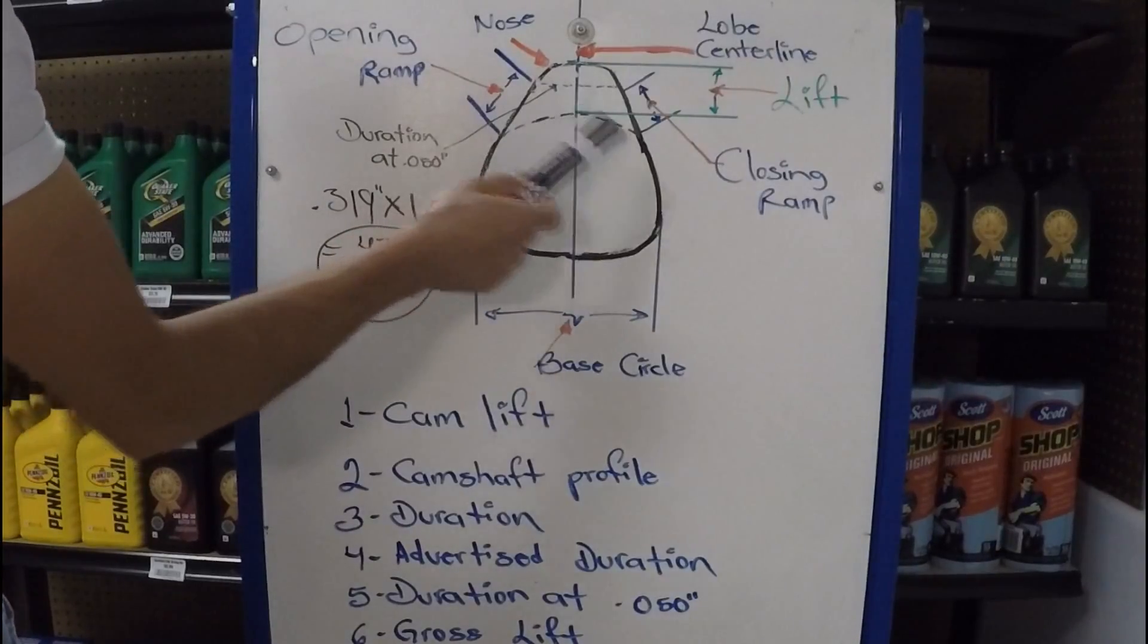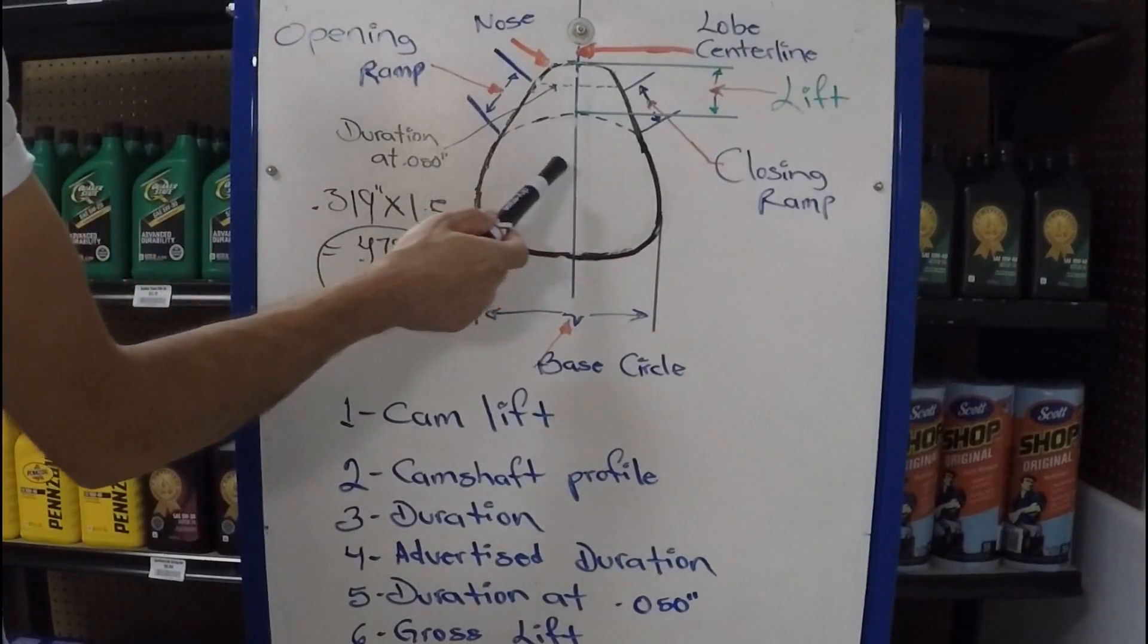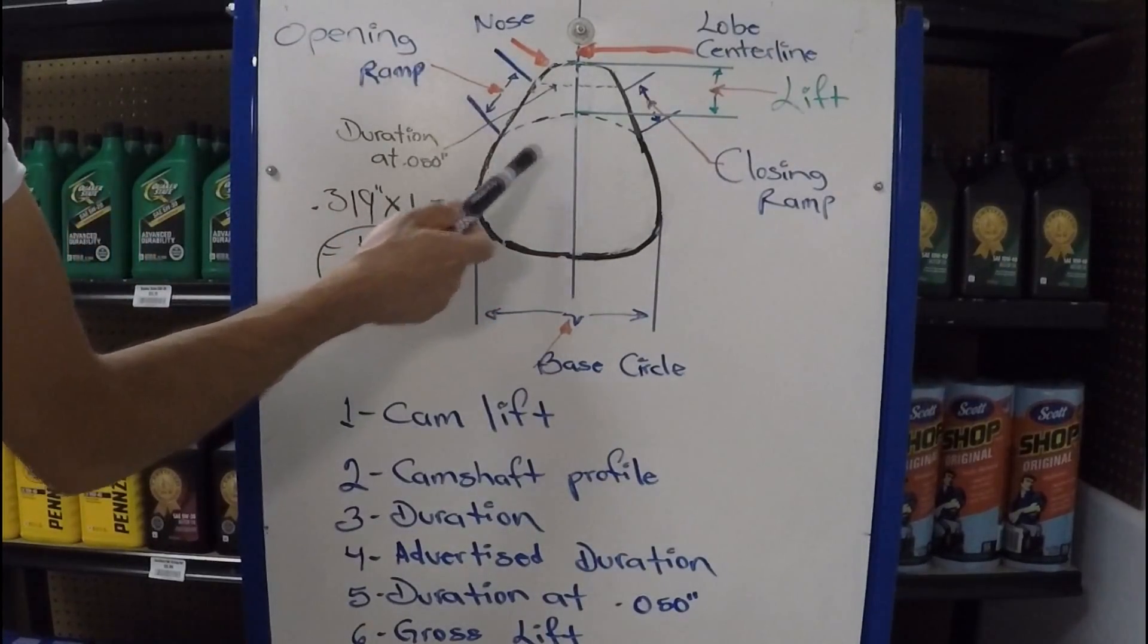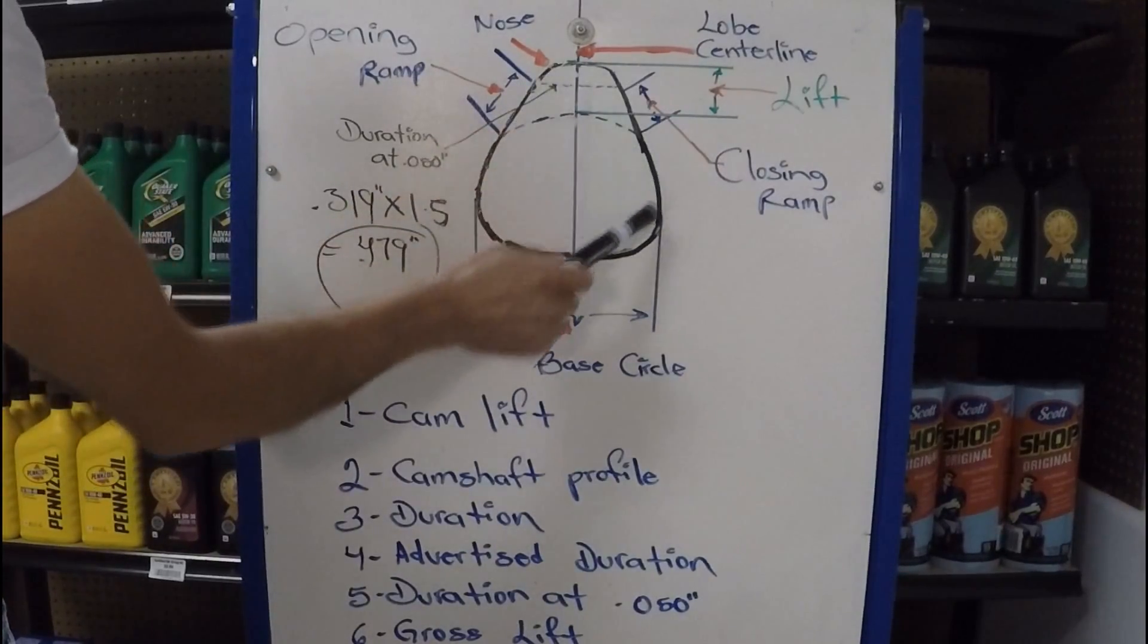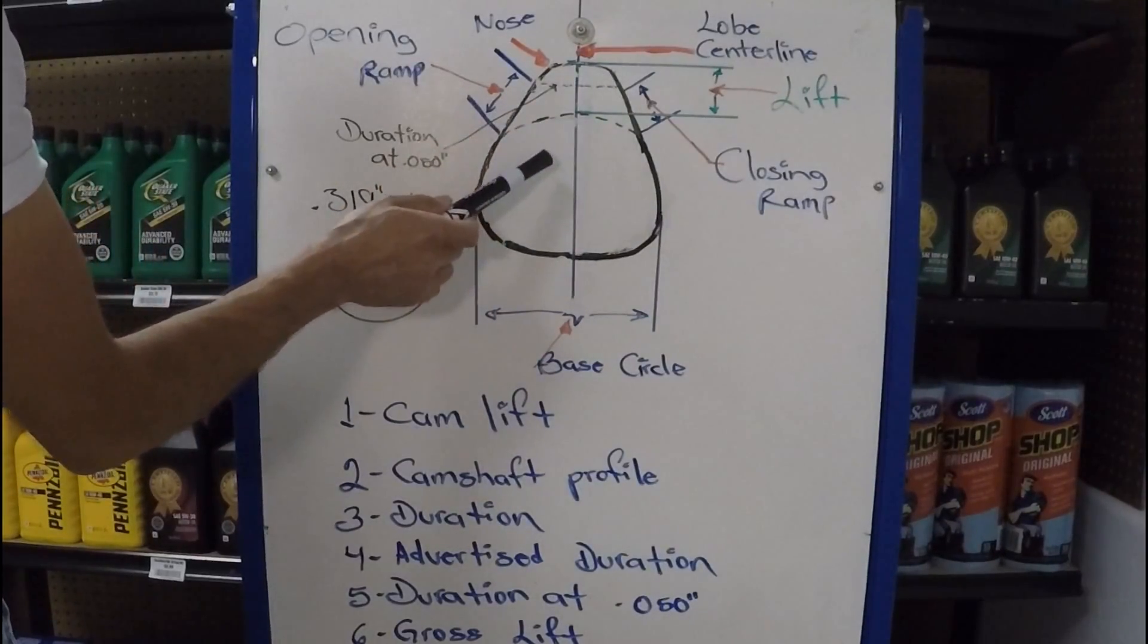and for the next video, we're going to go into more detail, like overlap, and how to choose the correct camshaft, depending on its profile. And you'll be able to understand it better, because now you know how the camshaft lobe is designed, and how the shape of the lobe affects the personality of the engine.